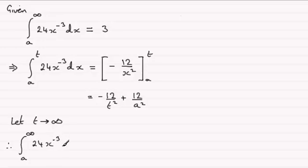This is going to equal, well as t gets larger this term gets smaller. We're just going to be left with 12 over a squared. So it's 12 over a squared.